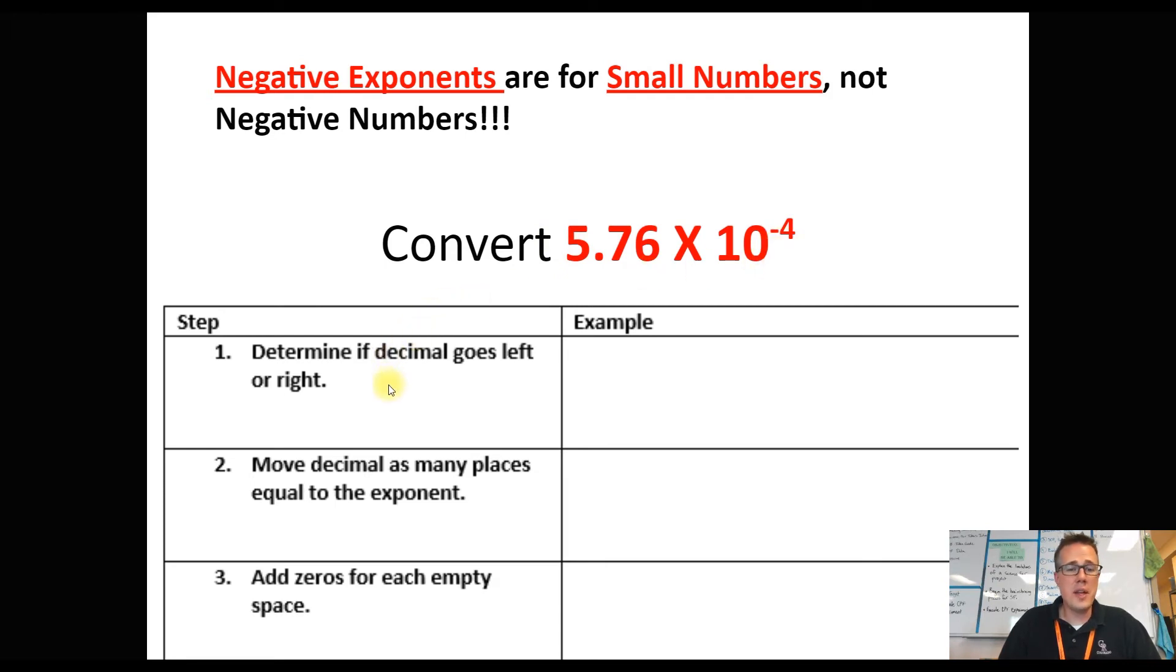So we're going to be basically undoing the steps that we did in the last example. We need to determine if we're going left or right with our decimal first. Since it's a negative exponent, we know we're going to have a small number. We have to ask ourselves, if I moved the decimal this way, would that make it smaller? Or this way, would it make it smaller? And moving things to the left are going to make it smaller. So we're going to have a decimal move to the left.